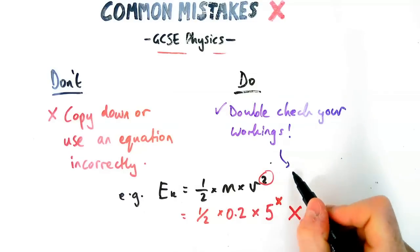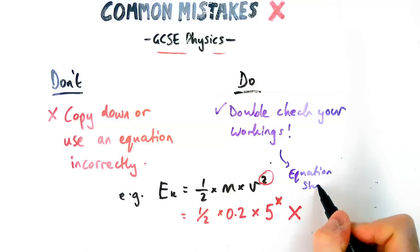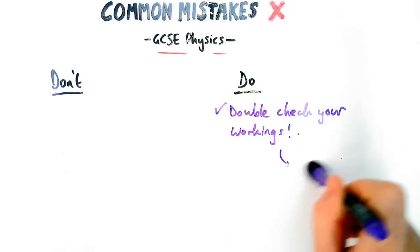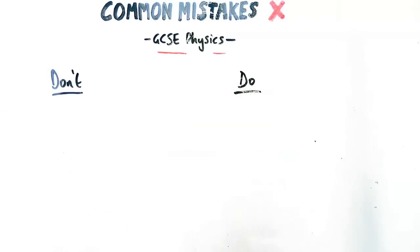because the equation's on the equation sheet. So you're going to get a zero for that question. So please double check your answers, especially if it's a more complex equation. Make sure you're actually squaring something if you need to do that. So you shouldn't be losing marks for that one.